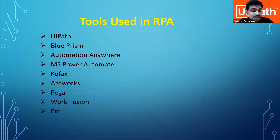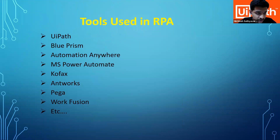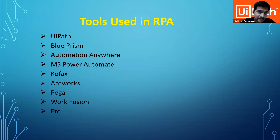A business analyst is not limited to any particular tool. The top RPA tools include UiPath, Blue Prism, Automation Anywhere, and others. A BA should not be specific to a single tool — he should be flexible to work, capture, analyze, and gather requirements regardless of the tool. Initially he may work on a UiPath process and later transition to other tools as well.